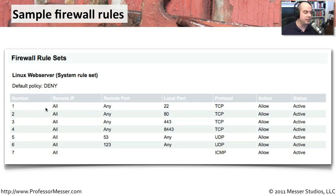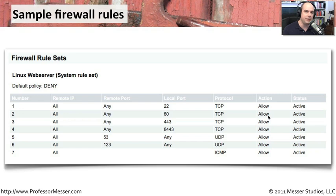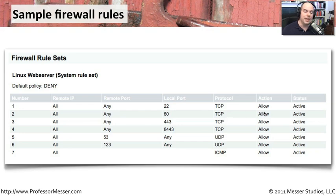If the traffic doesn't match rule one, we examine rule two: from any remote IP to any remote port, over port 80 TCP — allow that traffic. Port 80 TCP is HTTP-based traffic — our web service traffic. So if we're running a web server on this machine and somebody's trying to connect with a browser, it is firewall rule number two that allows that traffic to connect to the server.